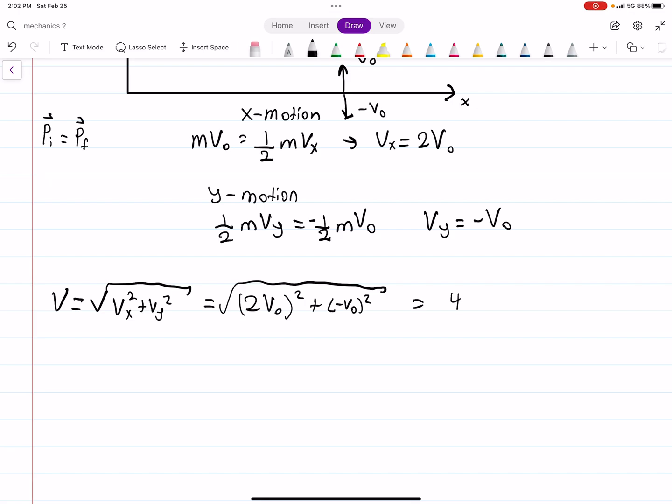So that's the square root of 4V0 squared plus V0 squared, which equals V0 times the square root of 5.